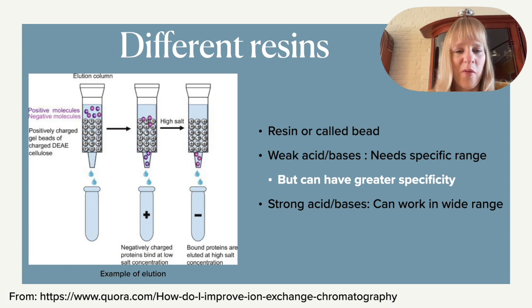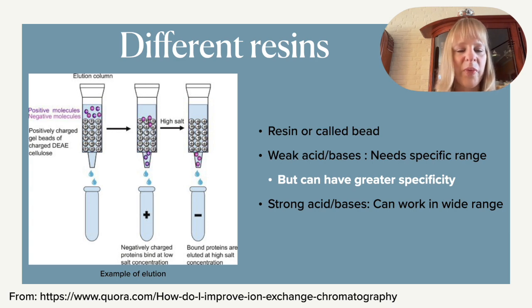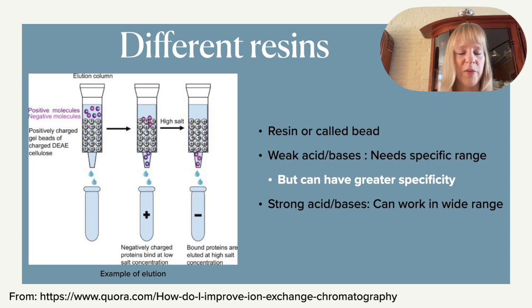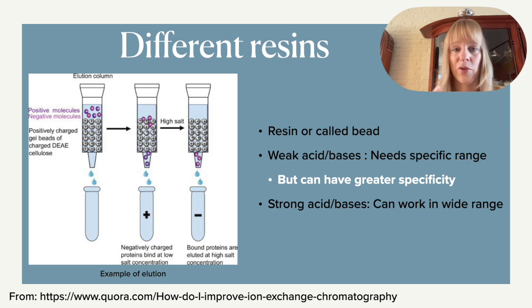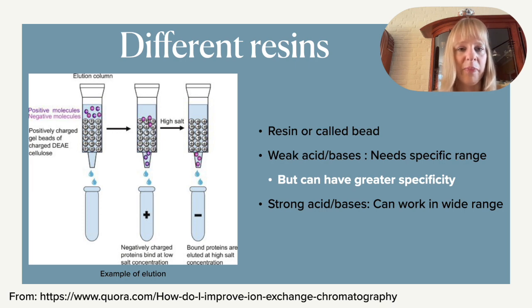There is a wide range of resins you can use. Some are strong acids and bases, meaning they keep their charge over a very wide pH range. Others are weak acids and bases, which only work in a very specific range — as soon as you go above or below that pH, they lose their charge. Both are important: weak acids and bases can have greater specificity. Optimizing your resin for ion exchange chromatography is often not trivial — conditions such as flow rate and salt concentration needed to elute are very time-consuming to establish.